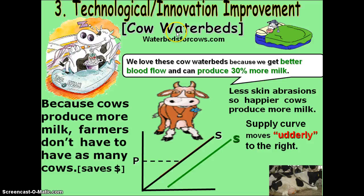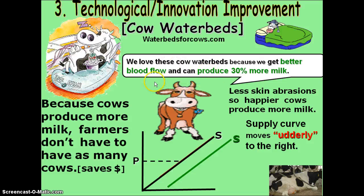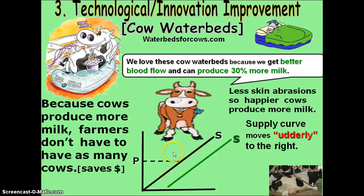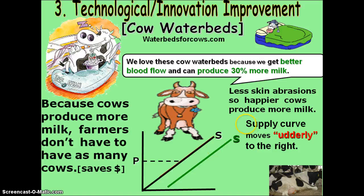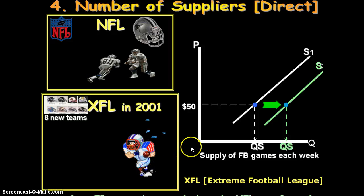The next shifter that might enable me to produce more of a good even if the price doesn't change is a technological innovation or improvement. For instance, staying with the farmers example — if I am a cattle farmer and I find a new technological innovation that allows me to get more milk out of my cows, that's a benefit to me. I can supply more; the price of milk isn't going anywhere, but we're going to move the black S out to the green S. Another example would be improvements to an assembly line, which would allow you to produce more of a good — moving outward to the right, increasing your supply, even though the price for that product paid by the consumer does not change.